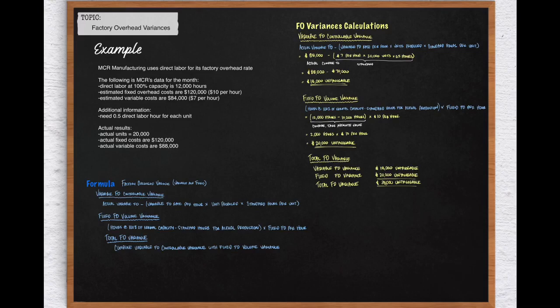All these variances are very important to managers for decision making, as they compare what they expect to their actual results. If they didn't like the total unfavorable amount, they can drill down to whether it's coming from the variable variance or fixed variance in respect to factory overhead, to understand why the result is what it is.